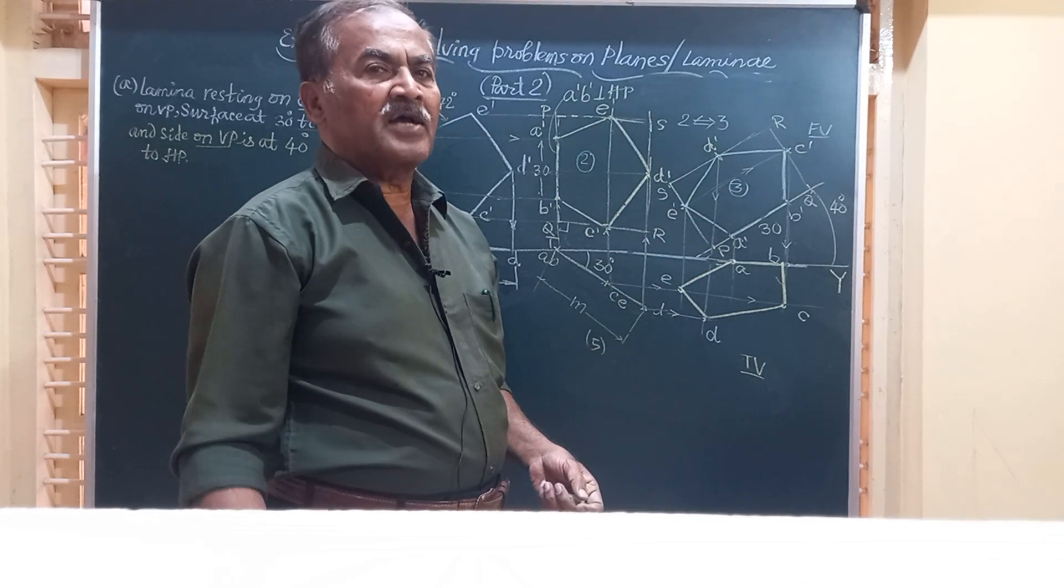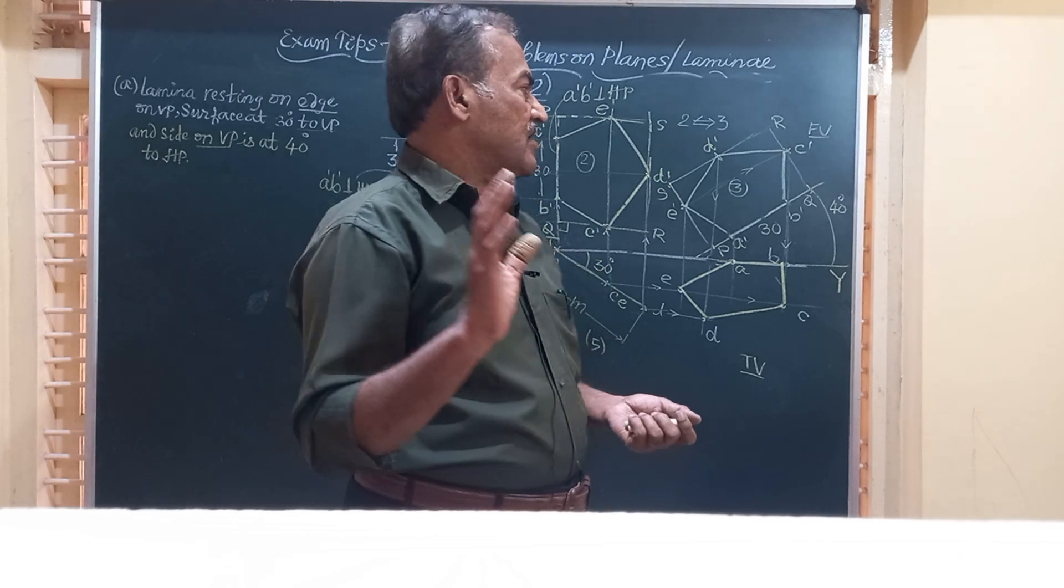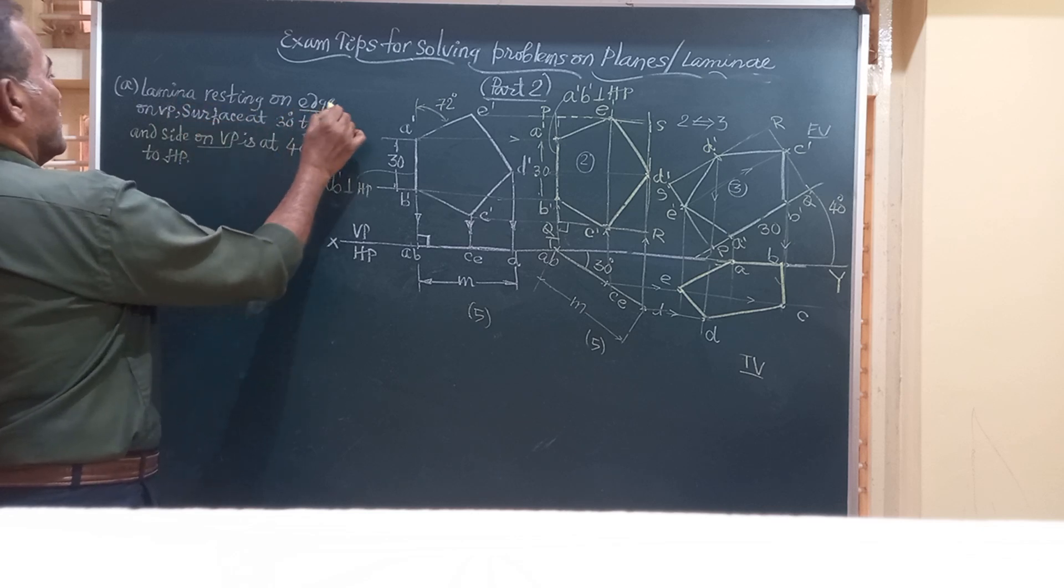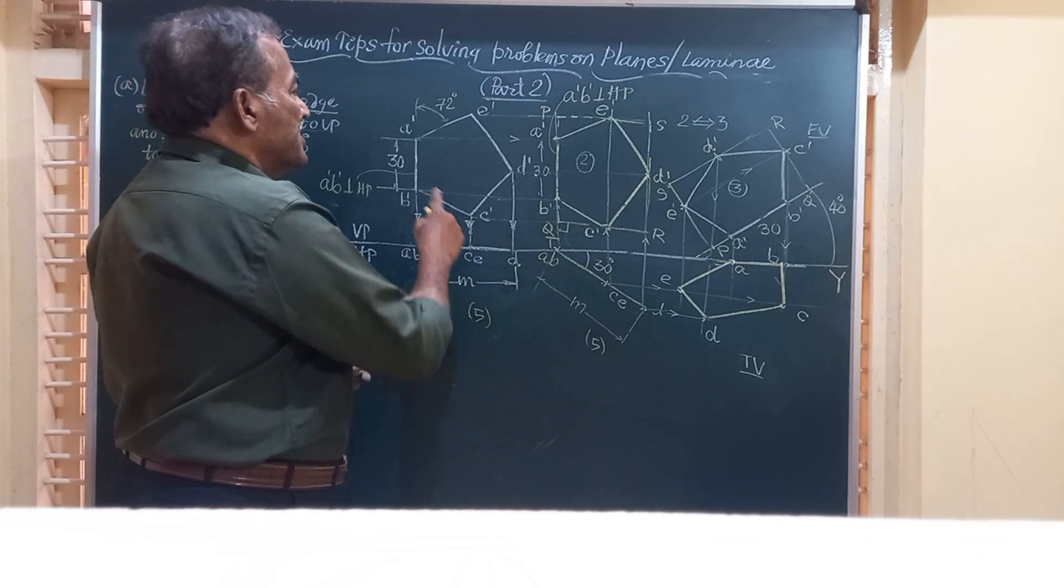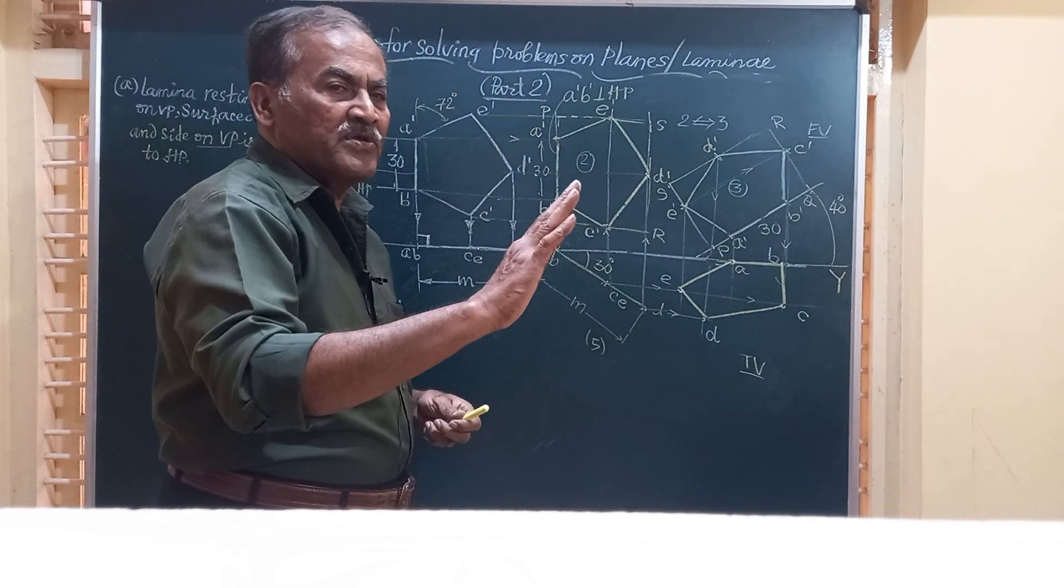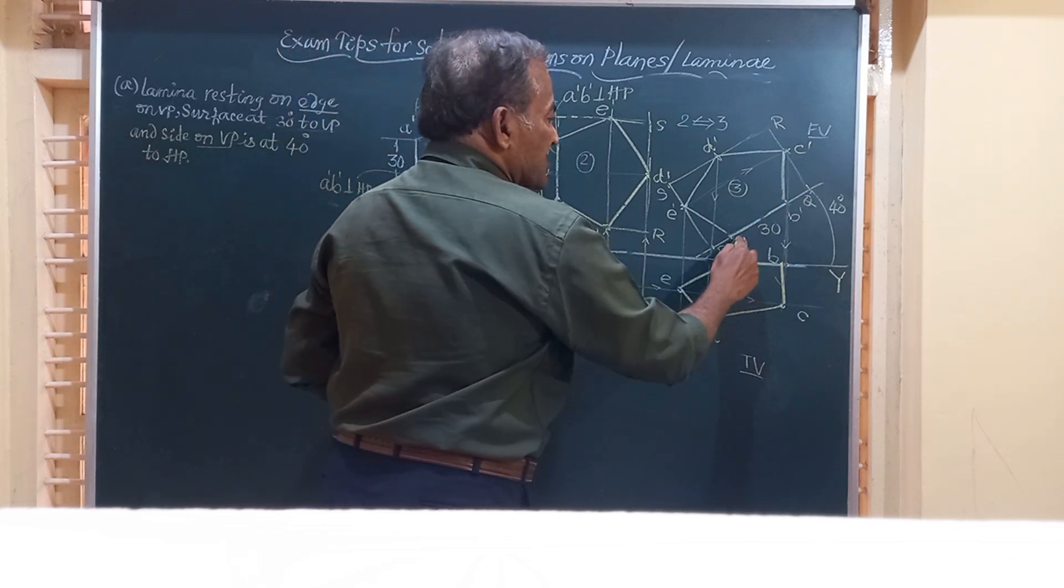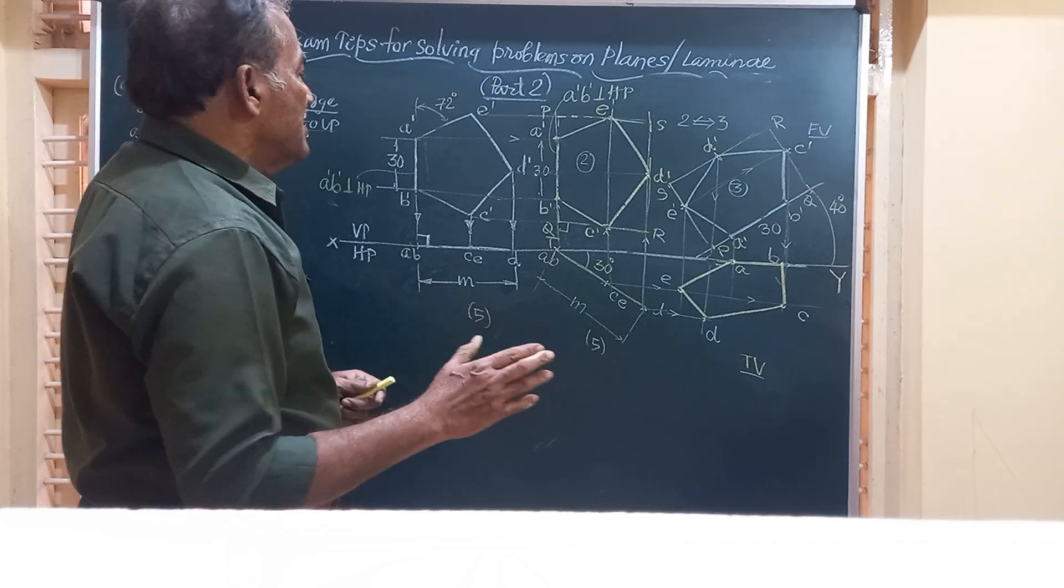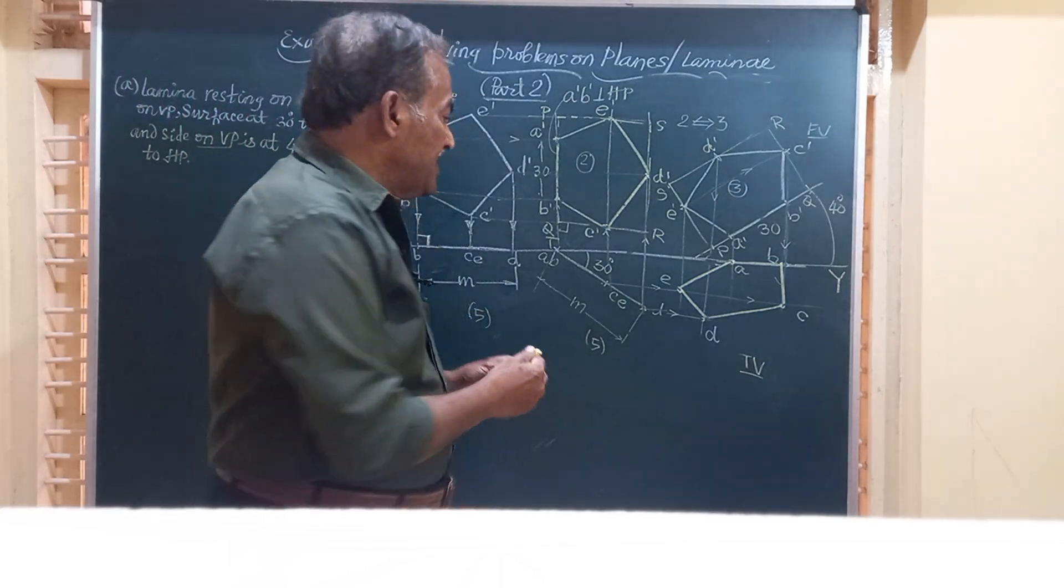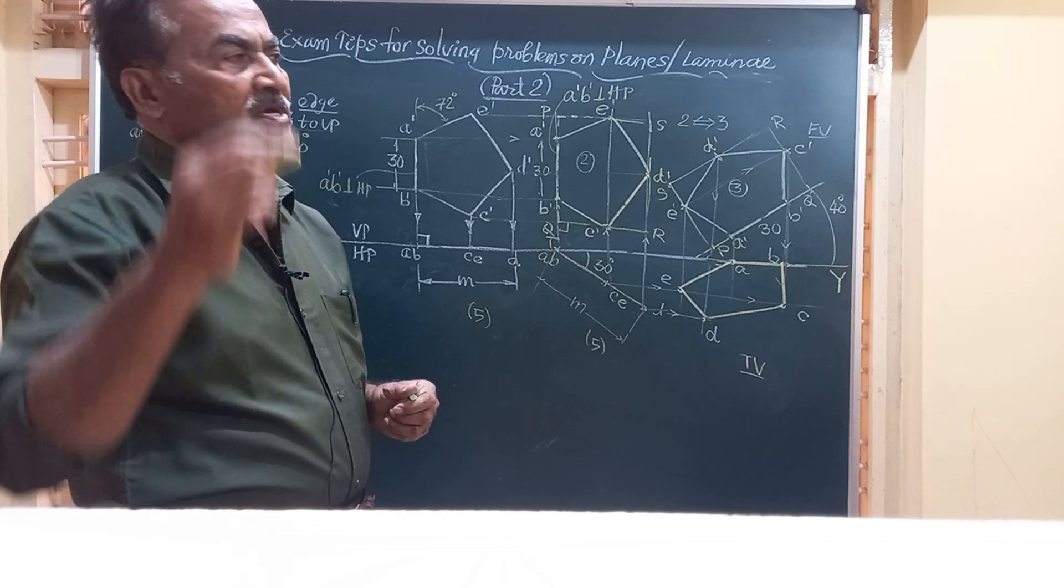Finally, before we conclude, we should have a check whether the solution we have got is right or wrong. How to check? Friends, the side of lamina is resting on side on VP. On VP, so in all the front view that side should be over the XY line, A dash B dash. Since it is on VP, the length of that will never change. So this is 30, this will be 30, this will be 30, this is also equal to 30. This is one part. Second part, surface is inclined at 30 degrees to VP. Surface is seen as a line, that line is here, this surface is at an angle of 30 degrees to VP and inclination to VP can be seen only in the top view.